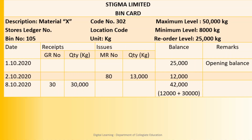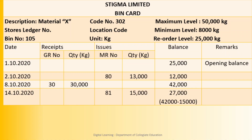On 8th, there is a purchase with GR No. 30, quantity 30,000 kgs. Whenever you purchase, the balance increases. So from the closing balance of 12,000 on 2nd, we add 30,000 units, which comes up to 42,000 kgs. On 14th, there is an issue against MR No. 81 — quantity 15,000 kgs. Whenever there is a receipt, balance increases; whenever there is an issue, the balance decreases. From 42,000 kgs on 8th, we deduct 15,000 kgs, leaving a balance of 27,000 kgs on 14th.